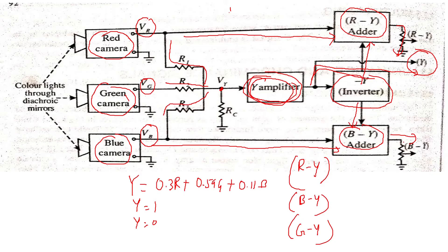R minus Y and B minus Y are referred to as U and V signals in the PAL (Phase Alternating Line) system used in India. In the NTSC system, these are referred to as I and Q signals. Here we follow only PAL, so R minus Y and B minus Y are named U and V signals. The Y signal carries brightness information while U and V carry color information.